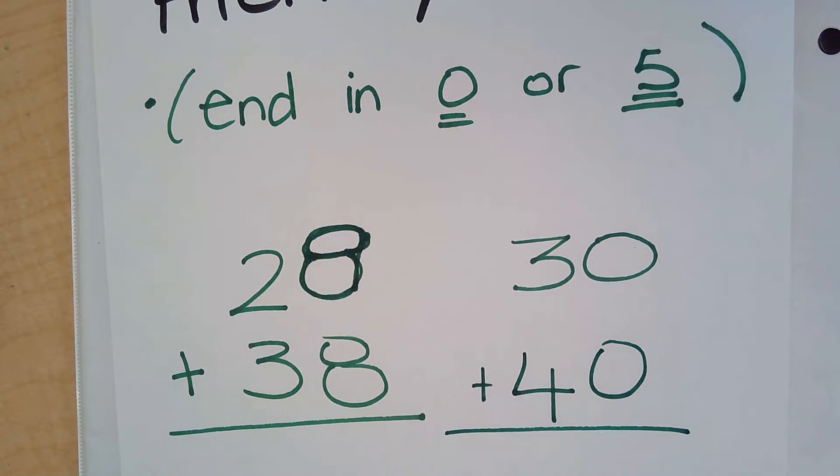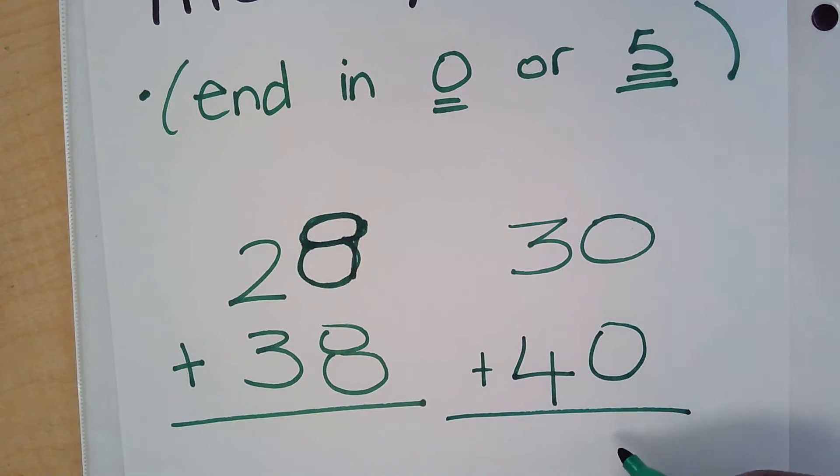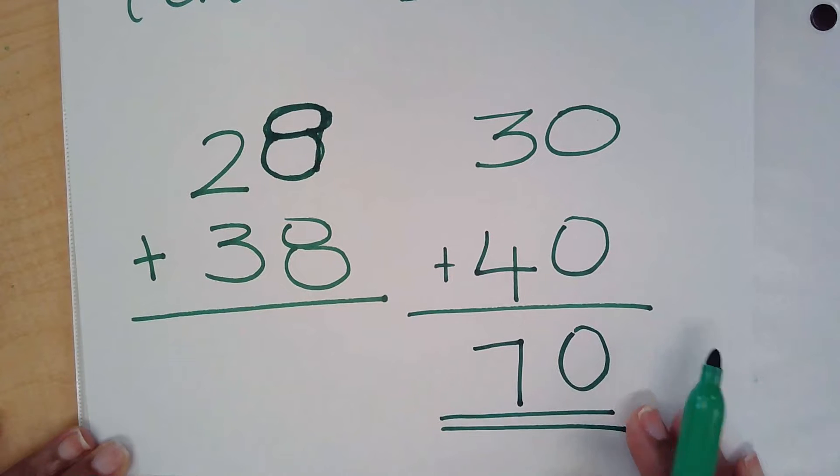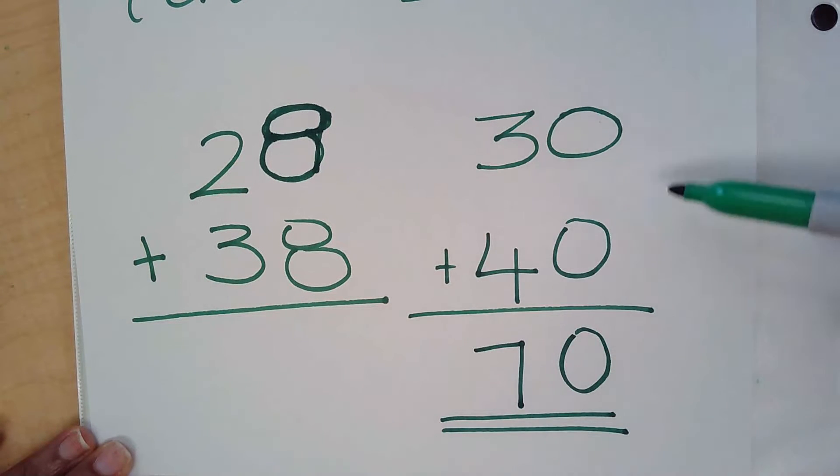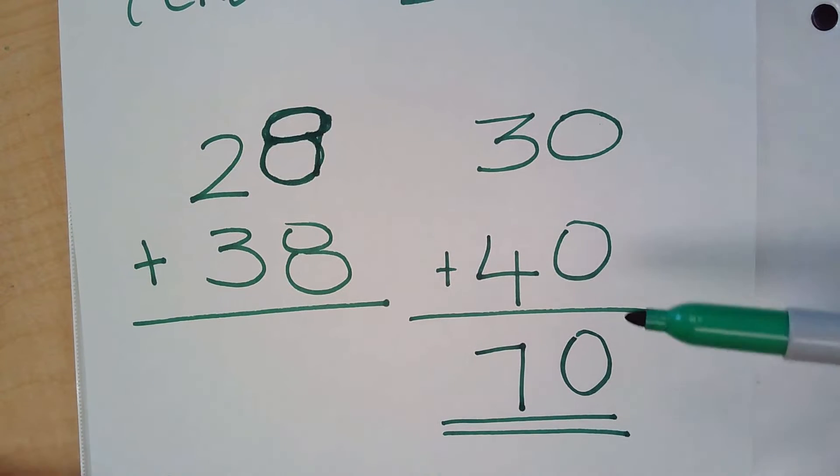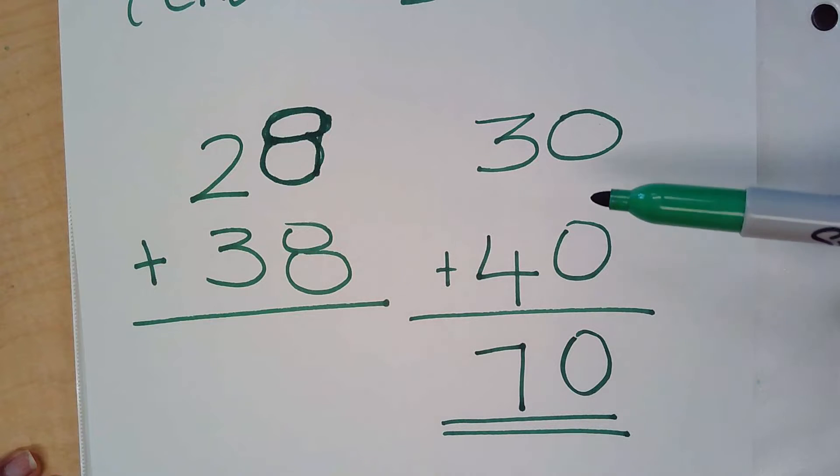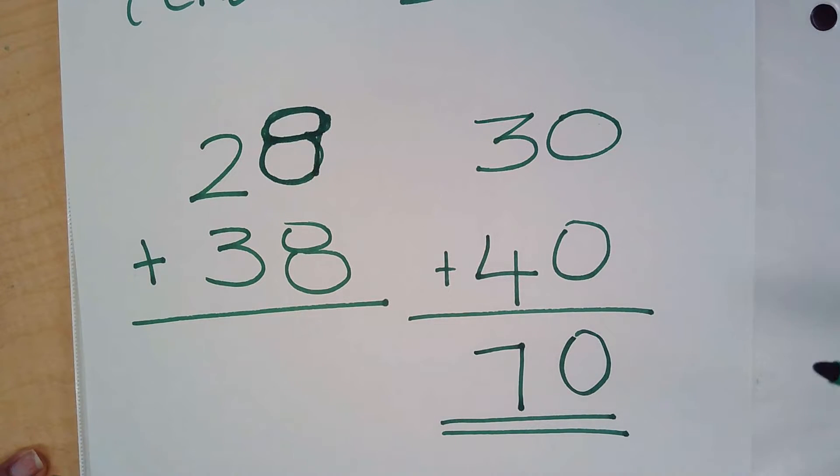Now what is the answer? 0 plus 0 is 0, and 4 plus 3 is 7. Our answer would be 70. Now, this is what makes it so easy to work with because these numbers ended in zeros. This is why working with compatible numbers, also known as friendly numbers, makes it easy for us to do mental math, because I didn't have to draw and count and use a bunch of tools or manipulatives to solve my answer.